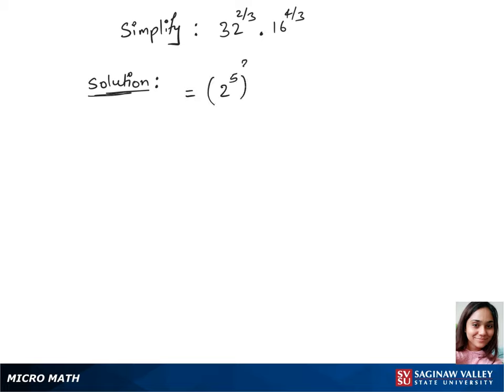So 32 is 2 power 5, whole power 2 over 3 remains, and times 16 is 2 power 4, whole power 4 over 3.